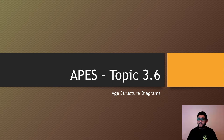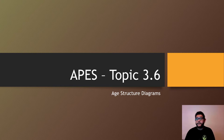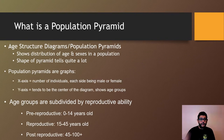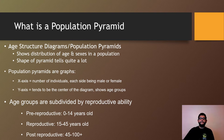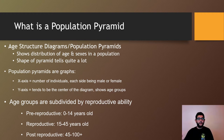Hey guys, this is Mr. V and this is episode number six of the APES review videos, unit number three. This one is going to be about age structure diagrams. When you see age structure diagrams, the other name you're going to hear is population pyramids. These are basically the distribution of the ages and sexes in a population, and the shape of the pyramid is going to tell us quite a bit.